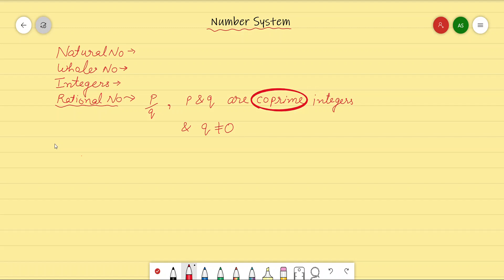We will talk about a few more properties of rational numbers. First of all, we will discuss the representation of rational numbers on the number line. We all have studied in our previous classes also. So suppose if I have to represent 3 by 4 on the number line, we will draw a number line.